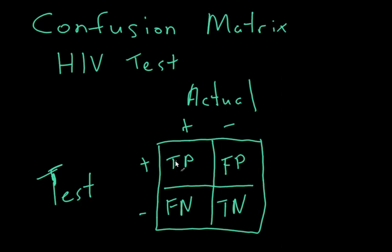So true positive means that, and I should explain on the left hand side. So this is what they tested for, and this is their actual. And so these rows and columns are actually the intersection. So in this case, they tested positive. They actually do have HIV, so that's a true positive.